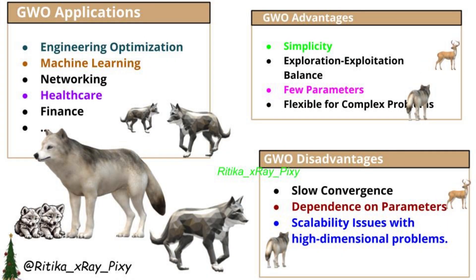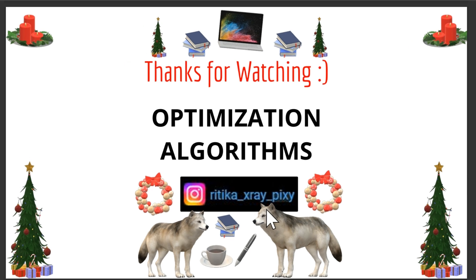We can use this algorithm to solve a wide range of optimization problems. Grey Wolf Optimizer applications include engineering optimization, machine learning, networking, healthcare, finance, and many other areas. Algorithm advantages: simplicity, few parameters, flexible for complex problems, good global searchability, and proper balance between exploration and exploitation phases. Algorithm disadvantages: sometimes slow convergence and dependence on parameters. This algorithm is widely used because it is simple and effective for diverse optimization tasks, but its performance may require careful tuning for specific challenges. That's all about this video — if you have any questions, comment below. Thanks for watching!